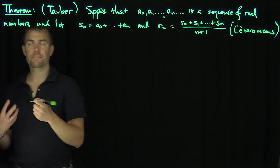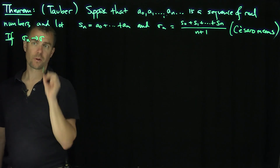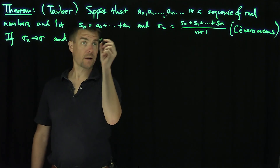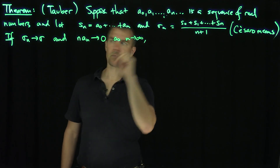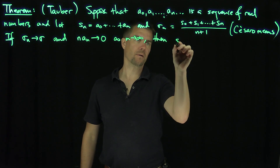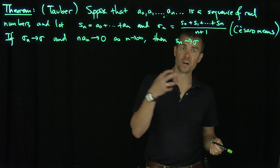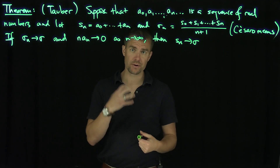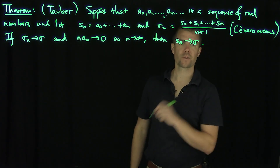The statement is the following: if σ_n converges to σ — in other words, if you're Cesaro summable — and n·a_n tends to 0 as n tends to infinity, then S_n, the partial sums, converge to σ. Remember that Cesaro summability is a weaker notion of summability than actual summability. So if you're Cesaro summable and you have this decay condition on your coefficients, then you're actually summable to the same value as the Cesaro limit. That's our theorem.